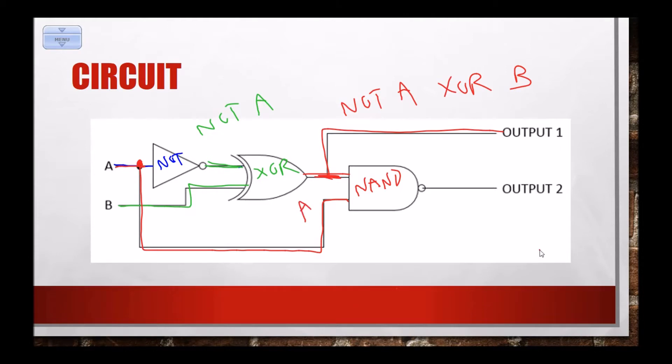So this bottom circuit is going to have as its output, well its first input was NOT A XOR B. It is a NAND gate. So NAND, which is NOT AND remember. Its second input was A. So A. So this is NOT A XOR B, that value, and then NAND A.